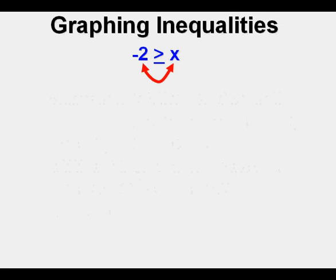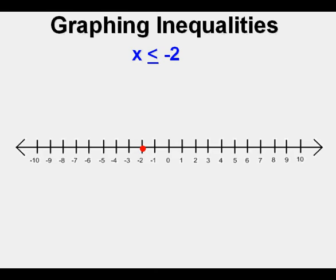The first thing we need to do to make things easier is to turn around the inequality to get the unknown on the left side. When we switch it around, we need to change the direction of the sign as well, so it becomes x is less than or equal to negative 2. To graph it, it helps to say 'x is equal to and less than negative 2.' On a number line, we mark the boundary point as a solid point since it includes equal to, and since the arrow tip for less than points to the left, we draw the arrow to the left on the graph as well.